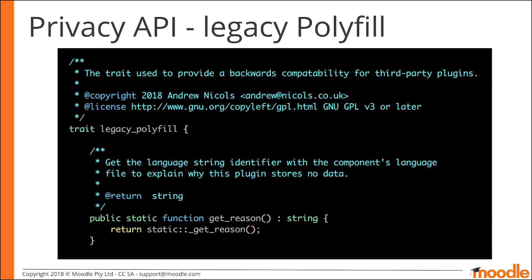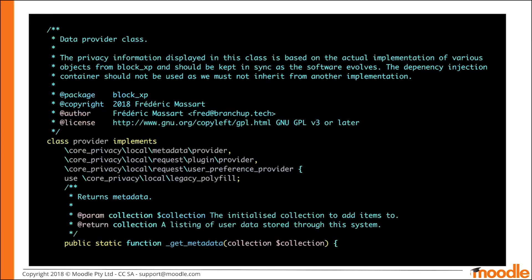We are aware that many plugin developers prefer to have one branch of their code for all versions of Moodle. When we wrote the Privacy API, we decided to use a number of PHP 7 features, such as return type declarations and scalar type hints. Since Moodle 3.3 still supports PHP version 5.6, these can't be used universally. To help with this, we have written a legacy polyfill. The Moodle documentation has more information on how to use this polyfill, but this example may give you some help.